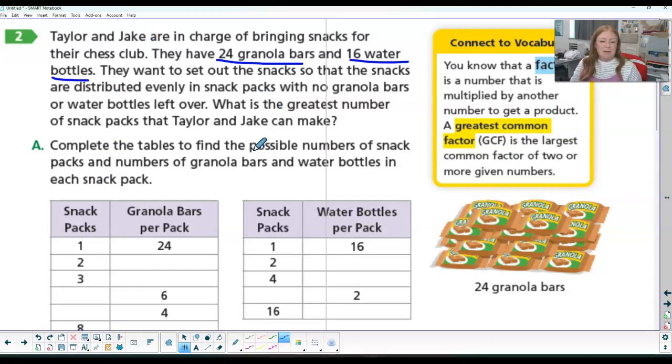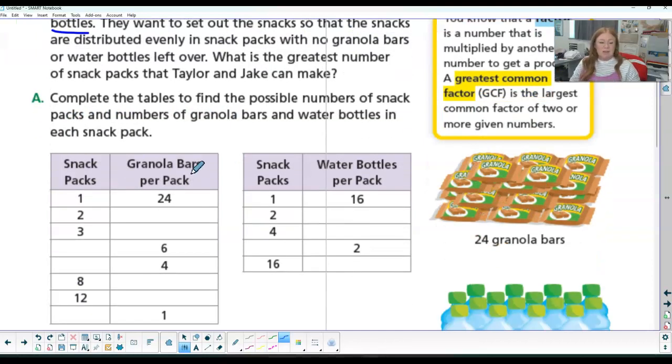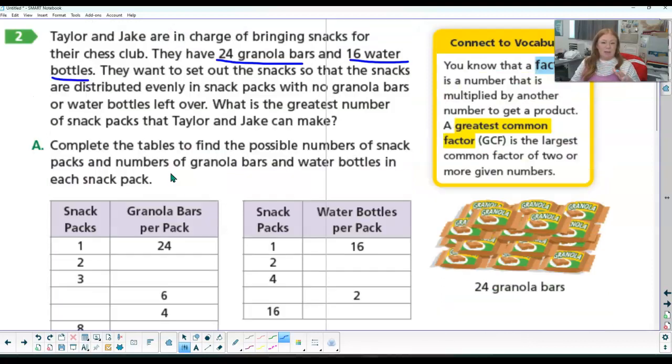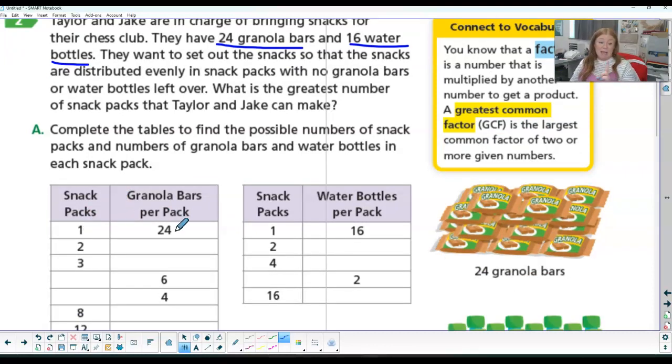Complete the table to find the possible number of snack packs and number of granola bars and water bottles in each pack. So first, we are taking our granola bars. There's 24 of them. And we're seeing what are the combinations of granola bars we can make. So we can make one pack that has 24 granola bars.